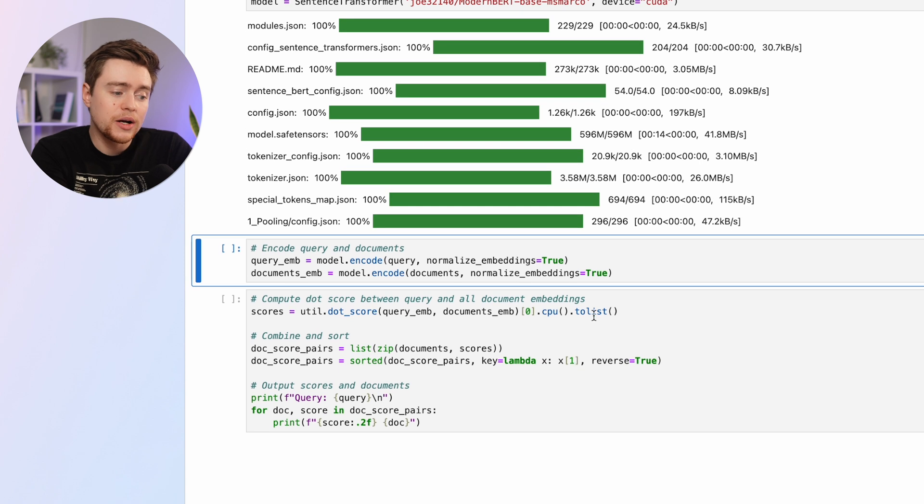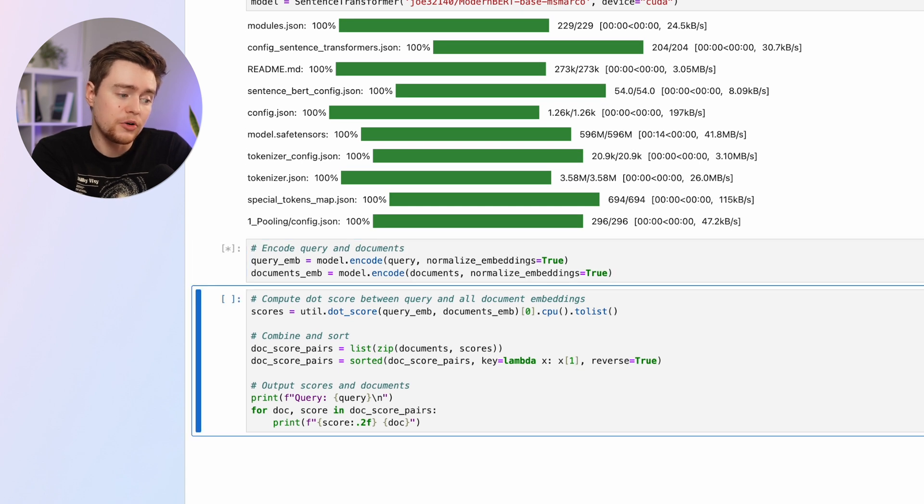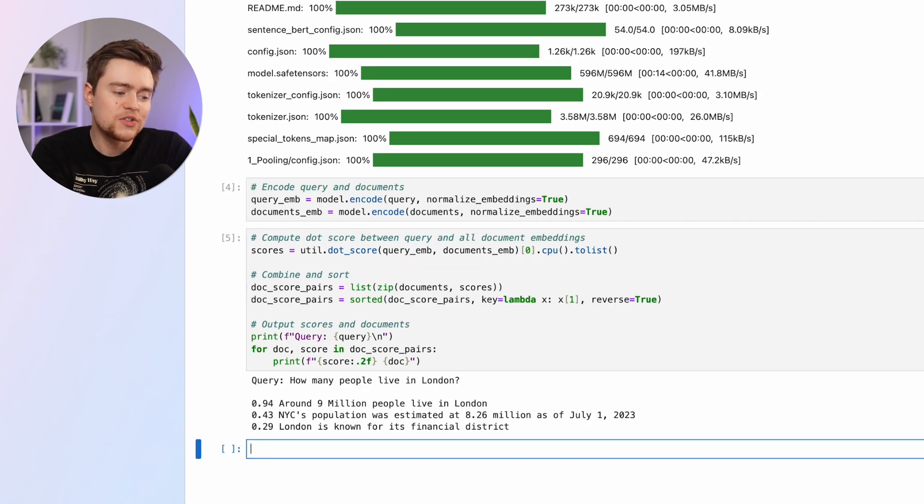All we have to do now is compute the representations for our query and the documents and then compute a dot product. This is the final output, which scores each document. The top one with the highest score is the most relevant document according to our model, and I would say the answer is correct.